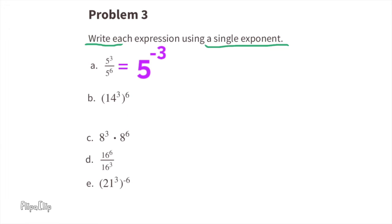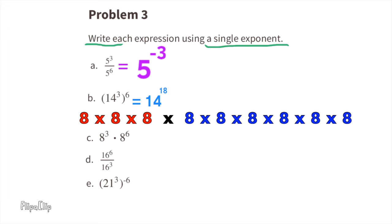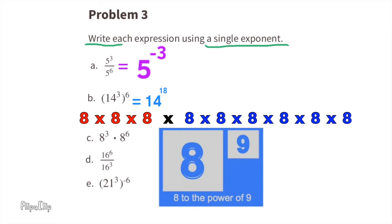Expression b: 14 to the power of three on the inside of the parentheses, and to the power of six on the outside. We can multiply these exponents and we have 14 to the power of 18. Expression c: 8 to the power of three times 8 to the power of six. Since they have the same base, you can add the exponents. The power of 3 plus the power of 6 is the power of 9, so the answer is 8 to the power of 9.